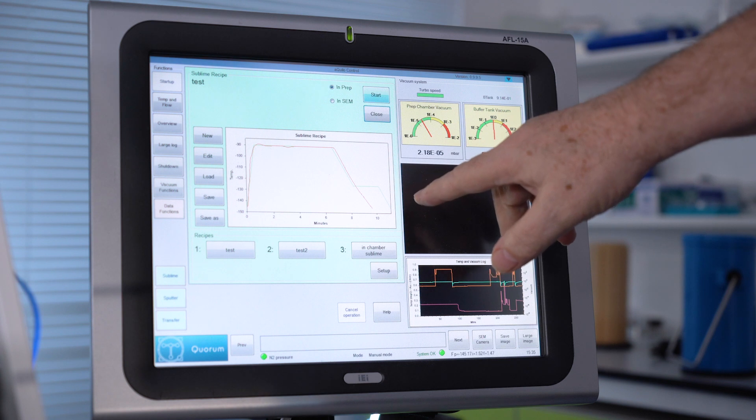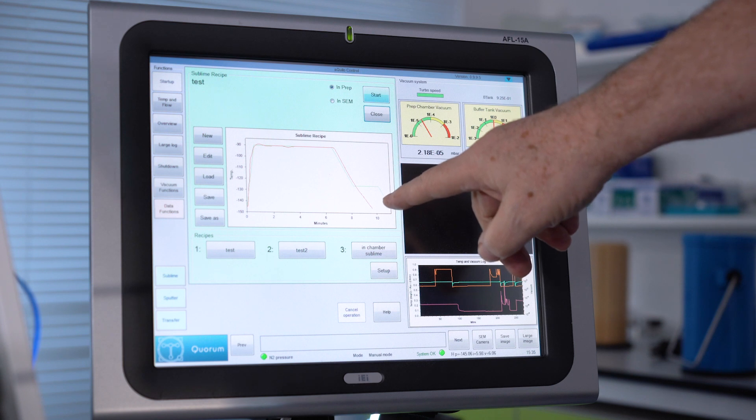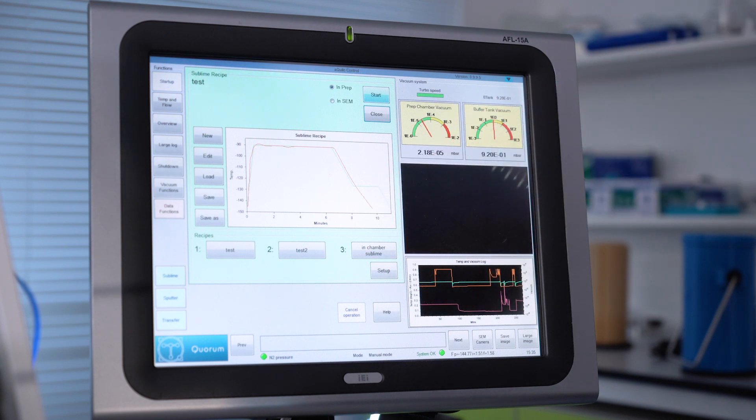All this curve can be saved and then used later in the report. And now that we've finished the sublimation, you can see the temperatures come back down to normal. We can then go on to coat the sample if we want to.